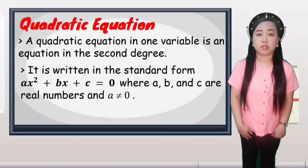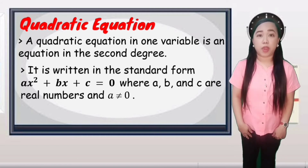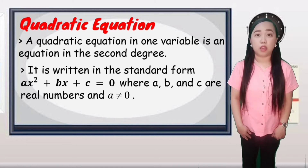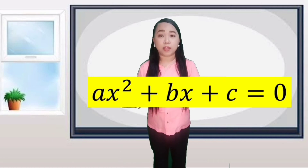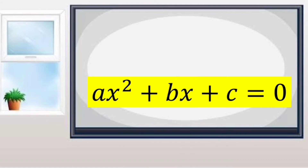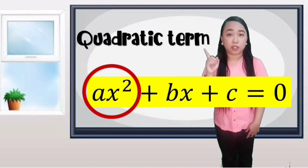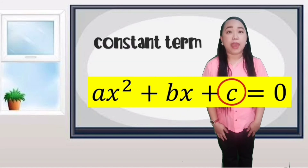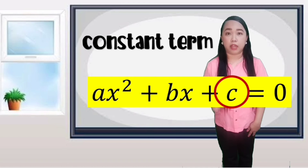The quadratic equation is written in standard form: ax squared plus bx plus c is equal to 0, where a, b, and c are real numbers, and a is not equal to 0. The standard form is ax squared plus bx plus c equals 0, wherein ax squared is the quadratic term, bx is the linear term, and c is the constant term.